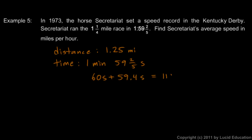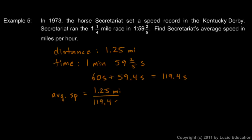60 seconds plus 59.4 seconds equals 119.4 seconds. Now we can find the average speed: distance divided by time, which is 1.25 miles divided by 119.4 seconds. That comes out to 0.01047 miles per second.